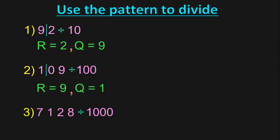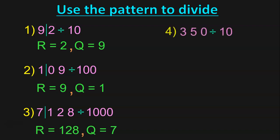The next sum is 7,128 divided by 1,000. Where should I draw the line? I should draw the line after the 100's place. So, the remainder is 128 and the quotient is 7. The next sum is 350 divided by 10: draw a line after the 1's place. The remainder is 0 and the quotient is 35.